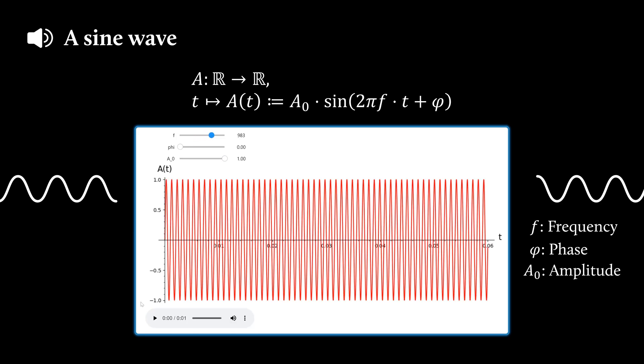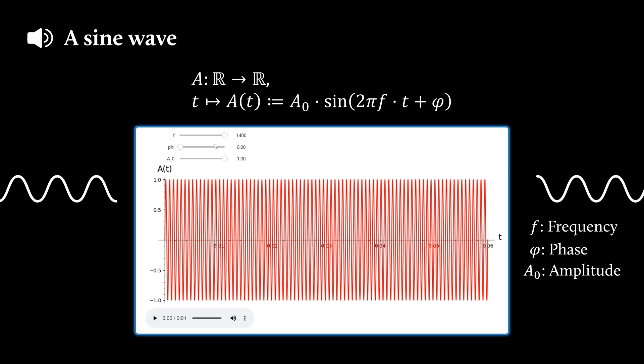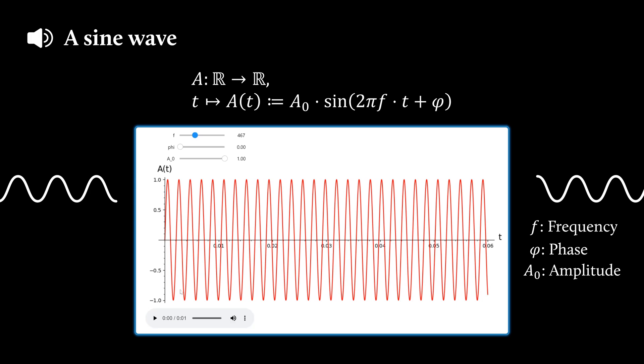Then we have F, the frequency of the signal. So it determines the number of variations per second, and therefore the pitch of the sound you hear.